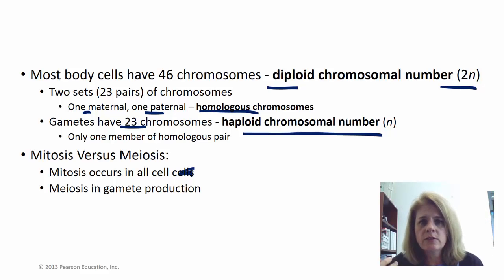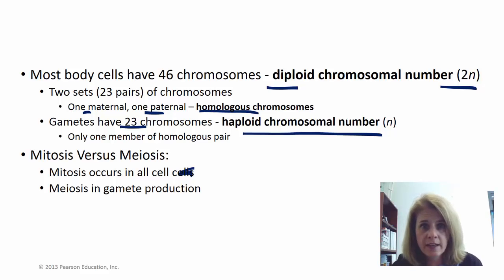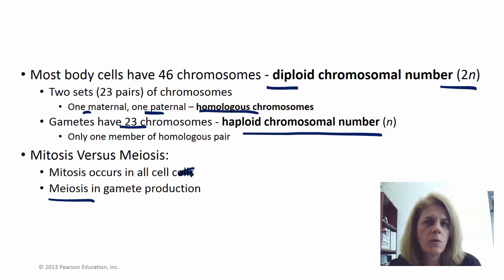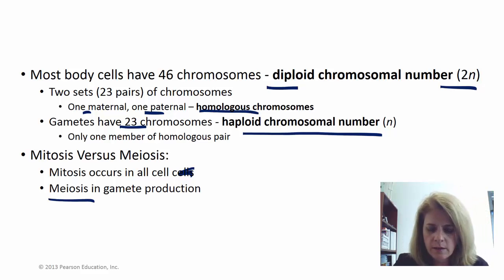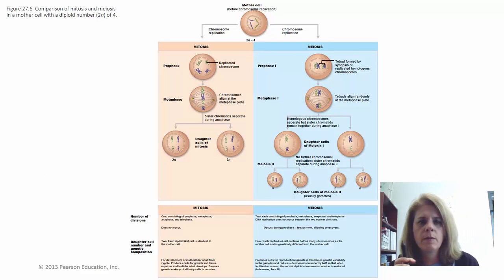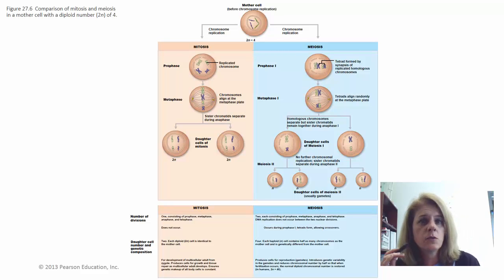There are different ways for cells to divide. Mitosis is when a cell divides and makes an exact copy of itself — so if you're replacing skin cells or cheek cells, that's mitosis. Meiosis is how we make gametes, or sperm and egg.